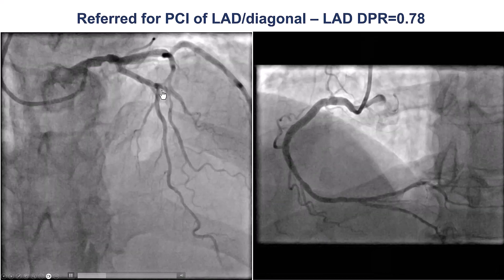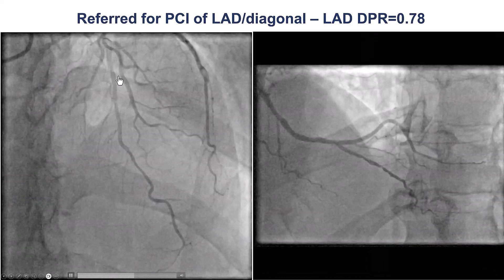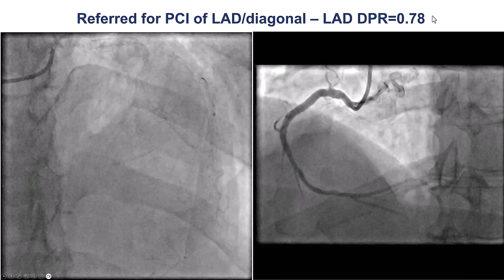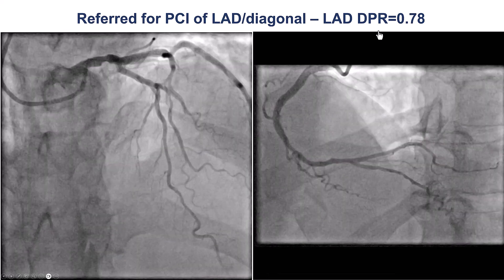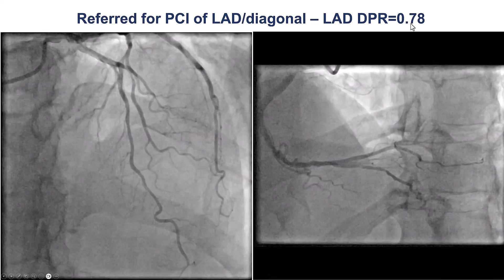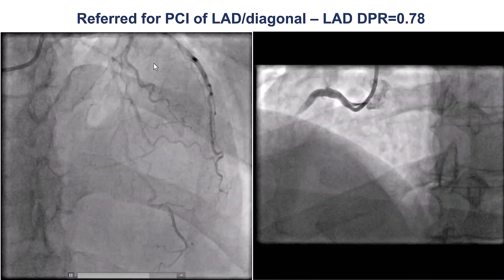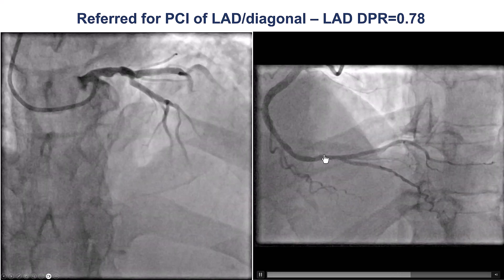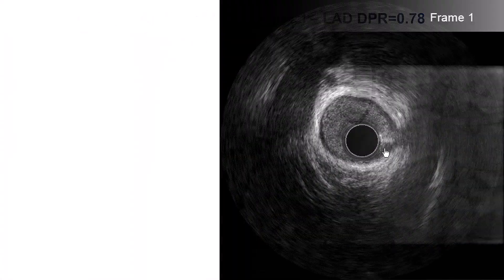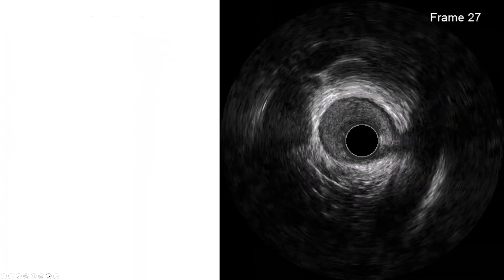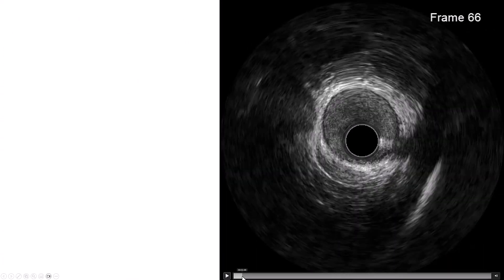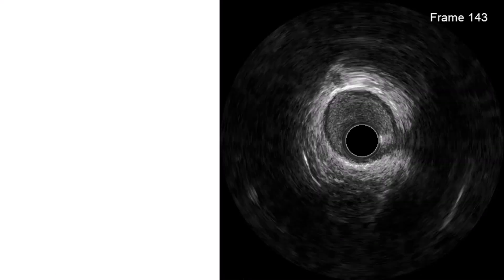In different views showing the diagonal lesion, the LAD doesn't seem too bad, but the DPR was 0.78, which is the equivalent of the IFR, and the step-up was right at the bifurcation. There was no significant disease in the right coronary artery. This is intravascular ultrasound, which is very important where there's some discrepancy between coronary angiography and physiology.